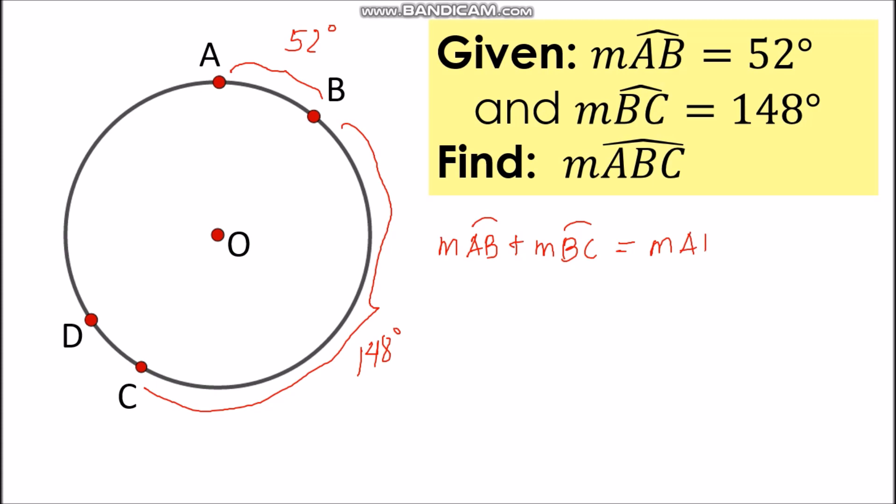This happens because arc AB and arc BCD are adjacent. So we can now substitute the values. So we have here 52 degrees plus 148 degrees.